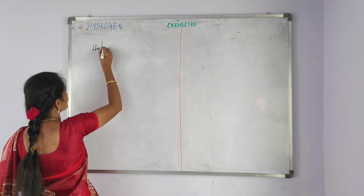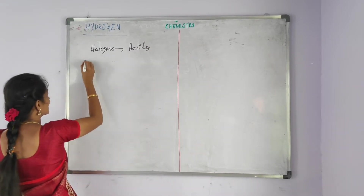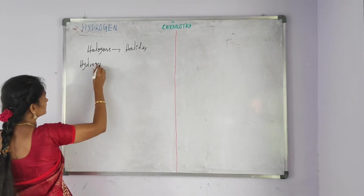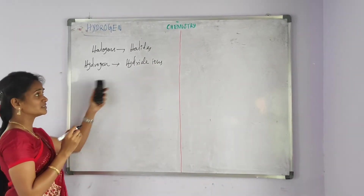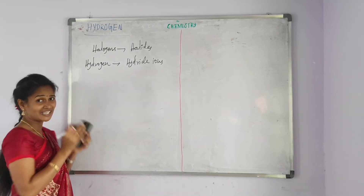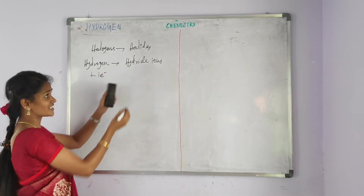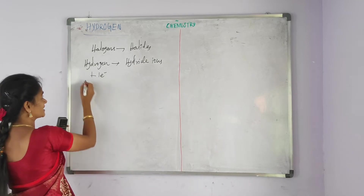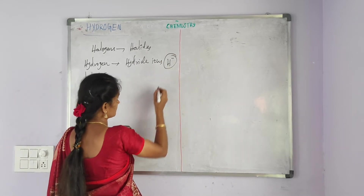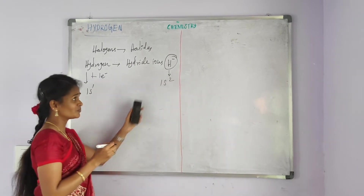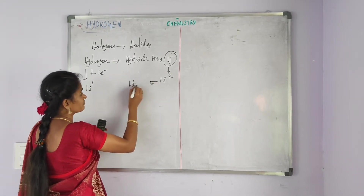Halogens have the tendency to form halides. Like halogens, hydrogen has the tendency to form hydride ions. Hydrogen gains one electron and is converted into a hydride ion. Hydrogen's electronic configuration is 1s¹, and the hydride ion (H⁻) has the electronic configuration 1s², which resembles the electronic configuration of helium.